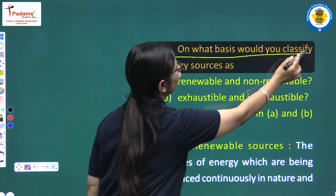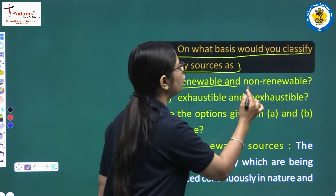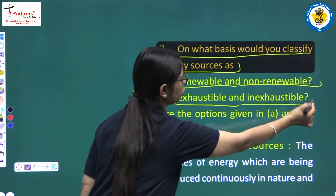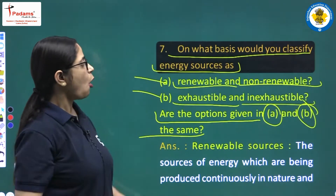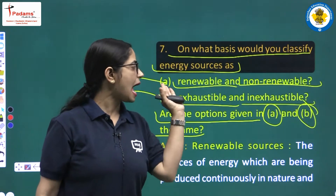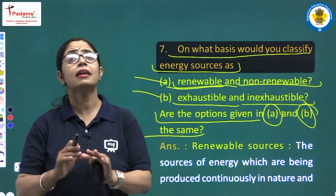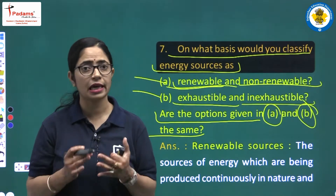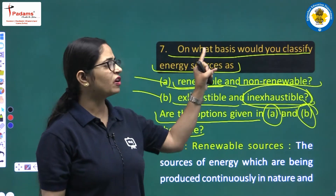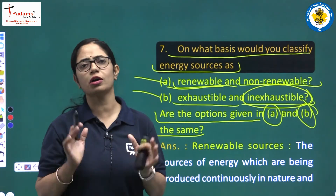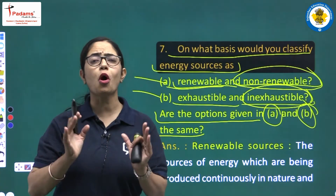Question number 7: On what basis would you classify energy sources? We classify energy sources as: first, renewable and non-renewable; and second, exhaustible and inexhaustible. A renewable source can regenerate and be used again — it is never depleted, so it is called inexhaustible. A non-renewable source cannot regenerate quickly — like fossil fuels coal and petroleum — and will exhaust if consumed, so it is called exhaustible.